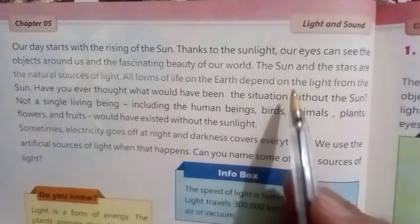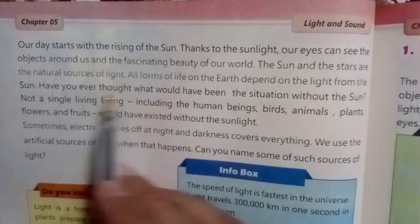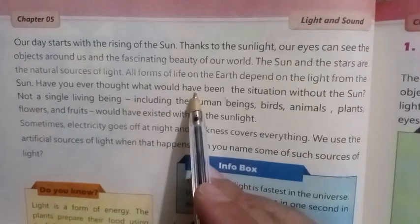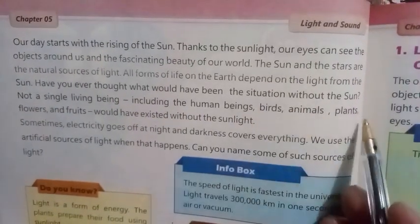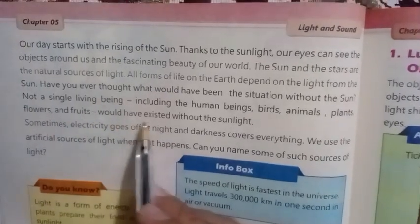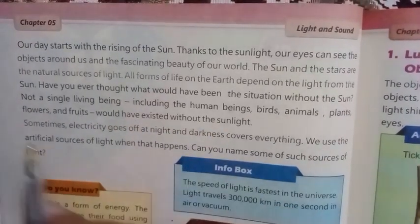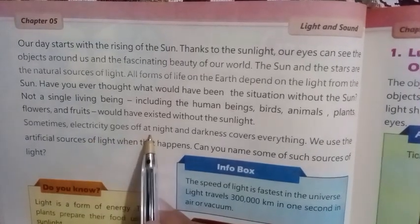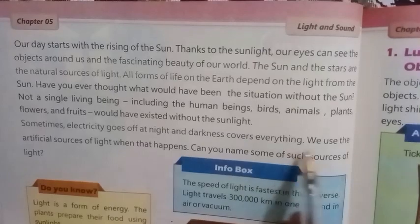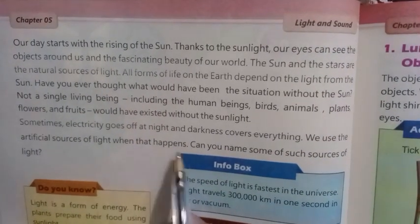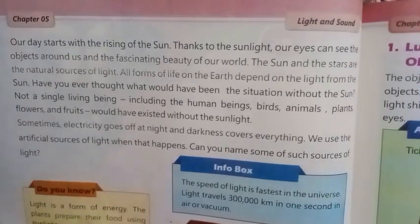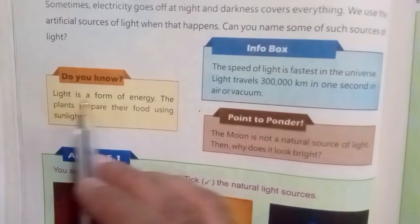All forms of life on the earth depend on the light from the sun. Have you ever thought what would have been the situation without the sun? Not a single living being — including human beings, birds, animals, plants, flowers, and fruits — would have existed without sunlight. Sometimes electricity goes off at night and darkness covers everything. We use artificial sources of light when that happens. Can you name some of such sources of light?